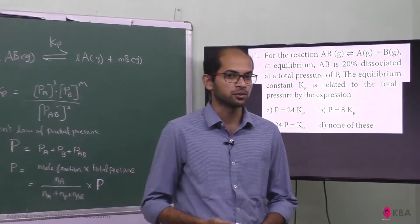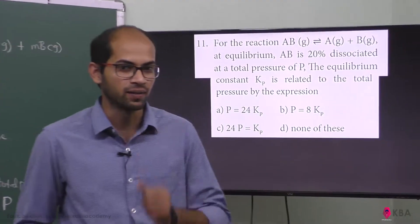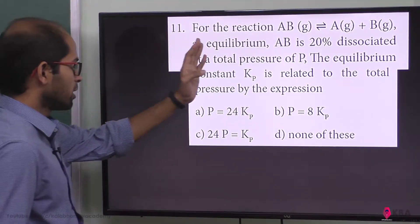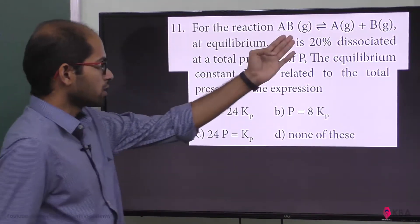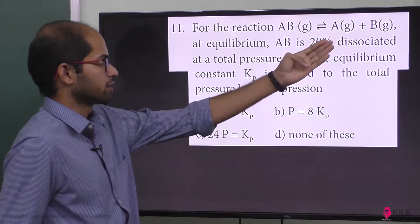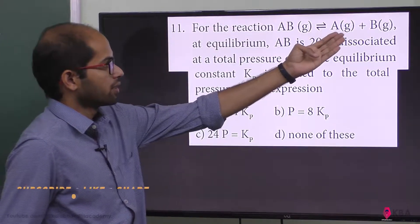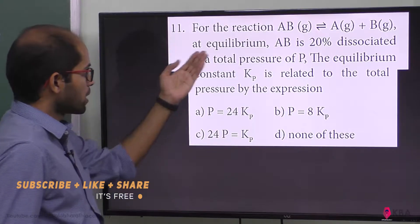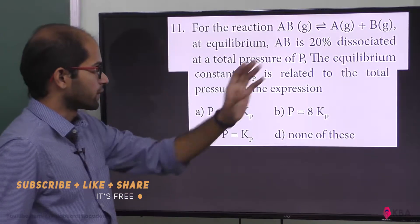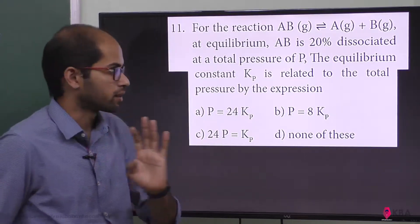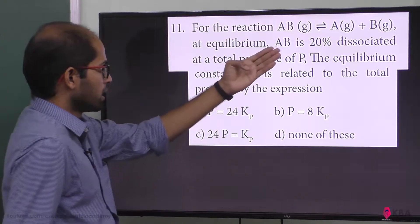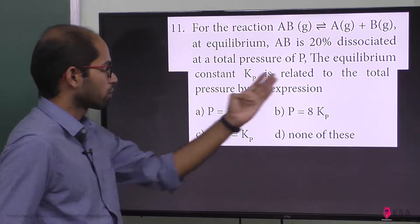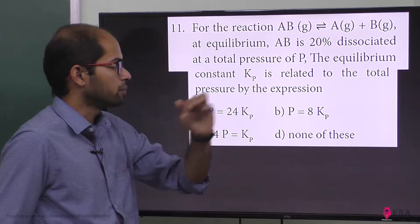Multiple choice question number 11, from the physical and chemical equilibrium chapter. For the reaction AB in the gaseous state gives A in the gaseous state plus B in the gaseous state. At equilibrium, AB is 20% dissociated at a total pressure of P.